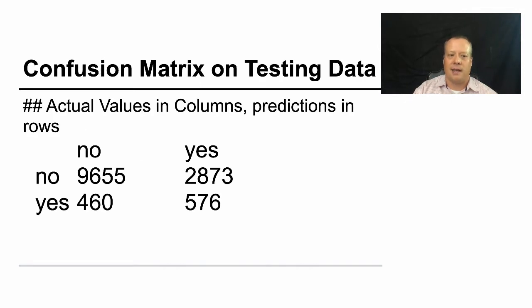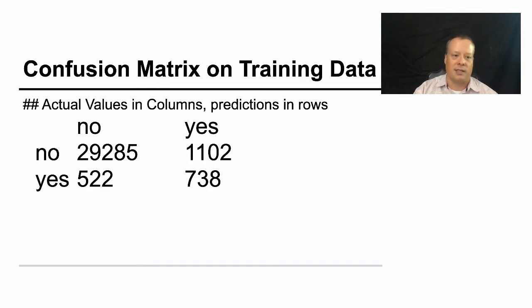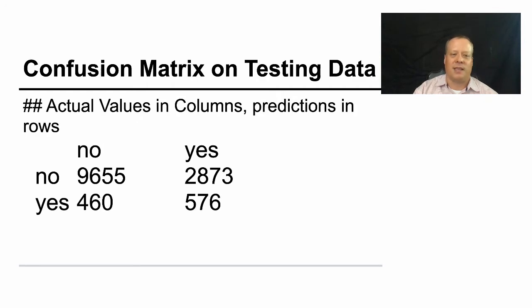And then this is on the testing data, and it looks like it's pretty similar, maybe, no, it's a little worse, but it's similar in terms of its overall performance. The reason why I say it's a little worse is because I know that these numbers are smaller, so that 460 versus the 522 means it's almost the same, and so it's obviously mislabeling more in this one because the percentage has gone up.